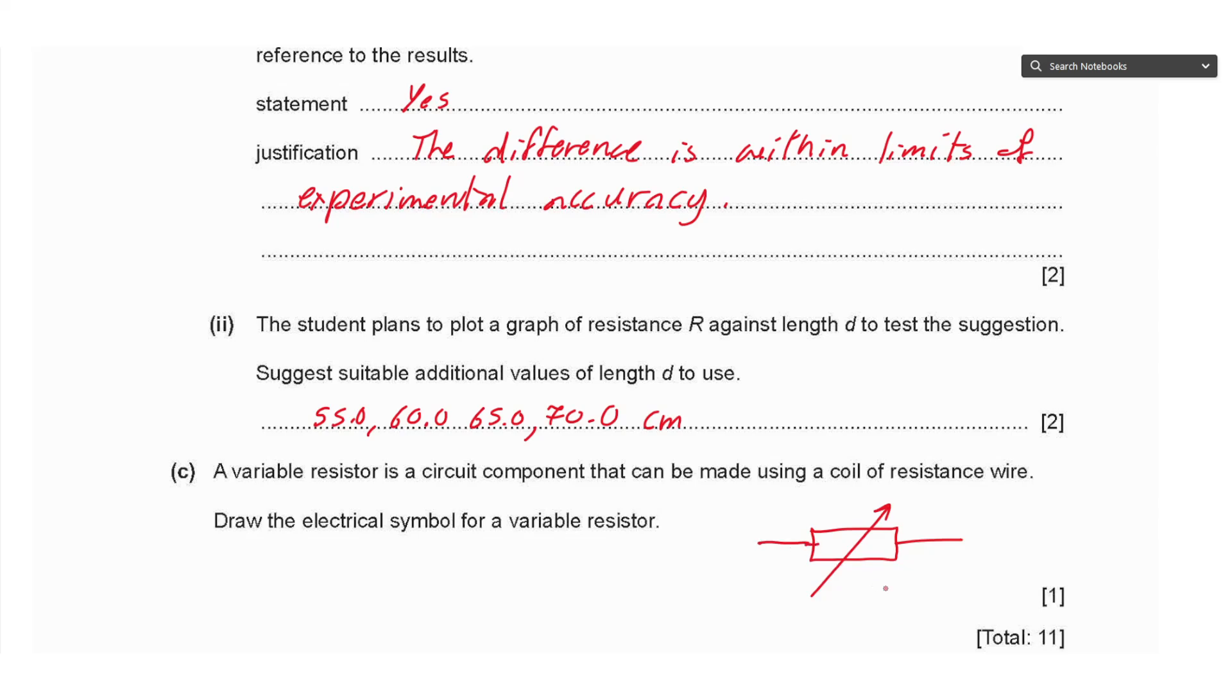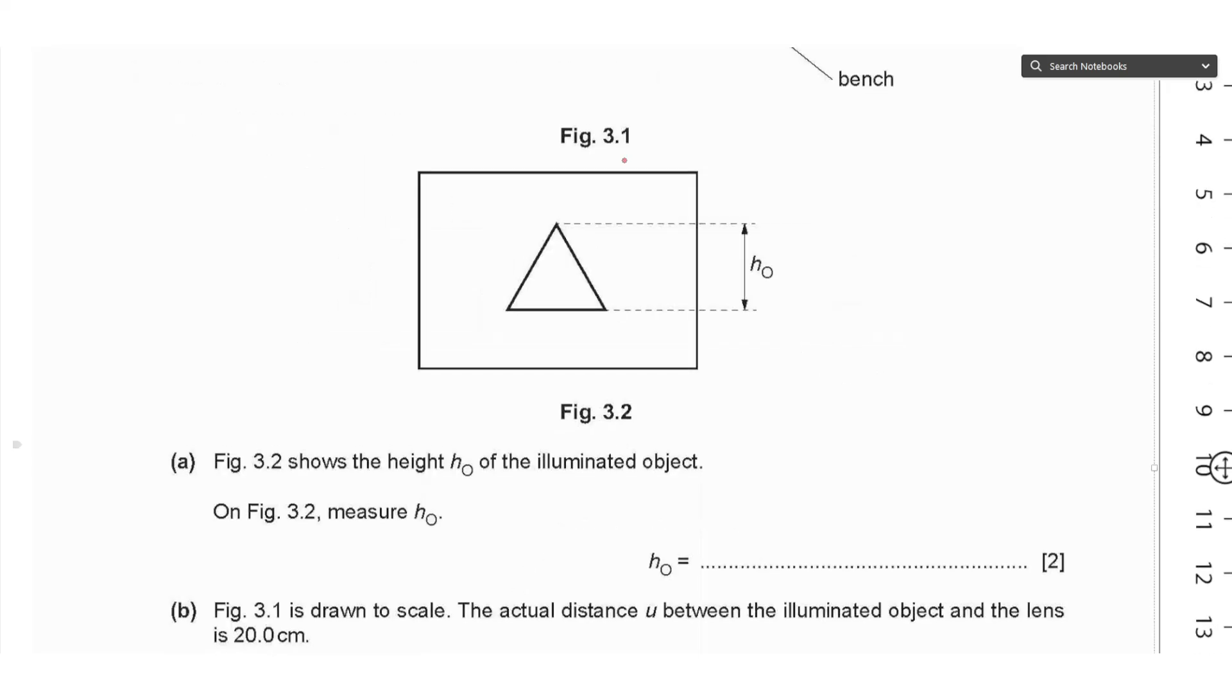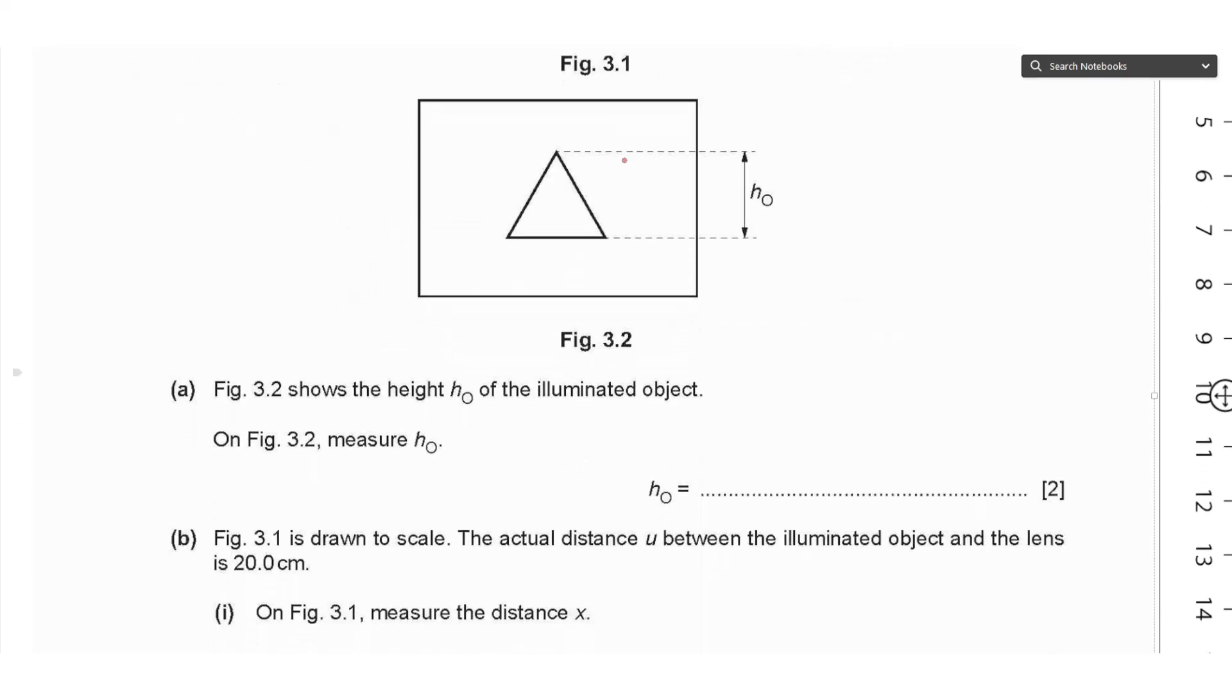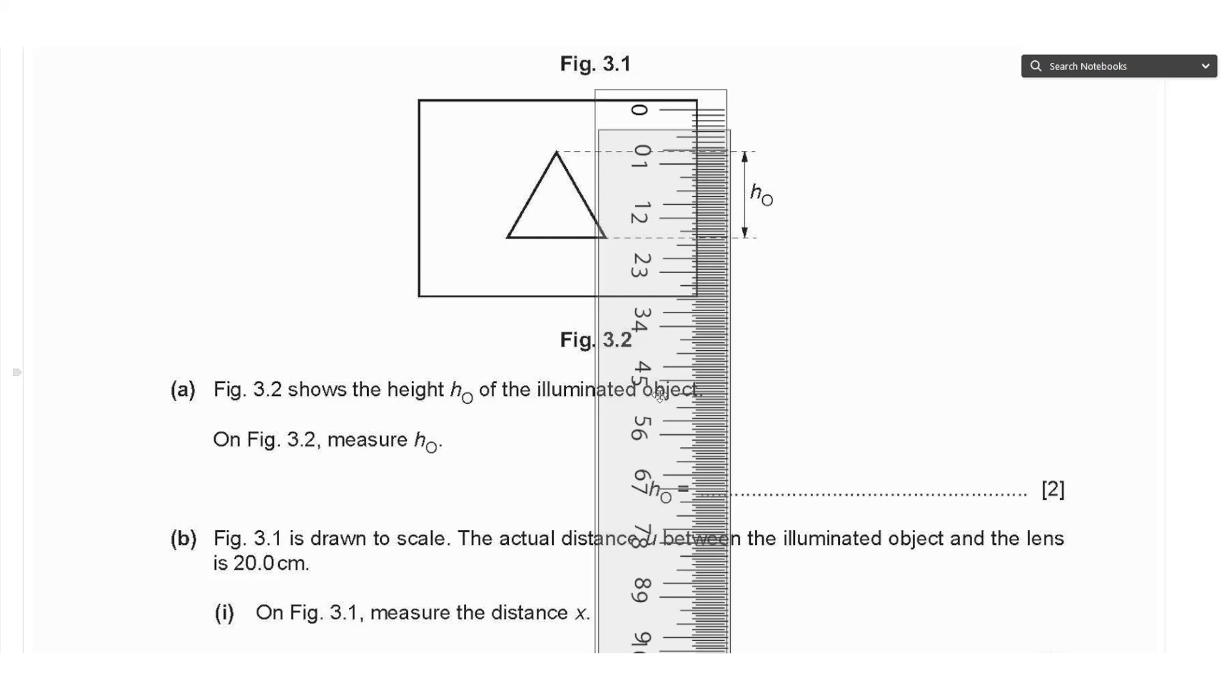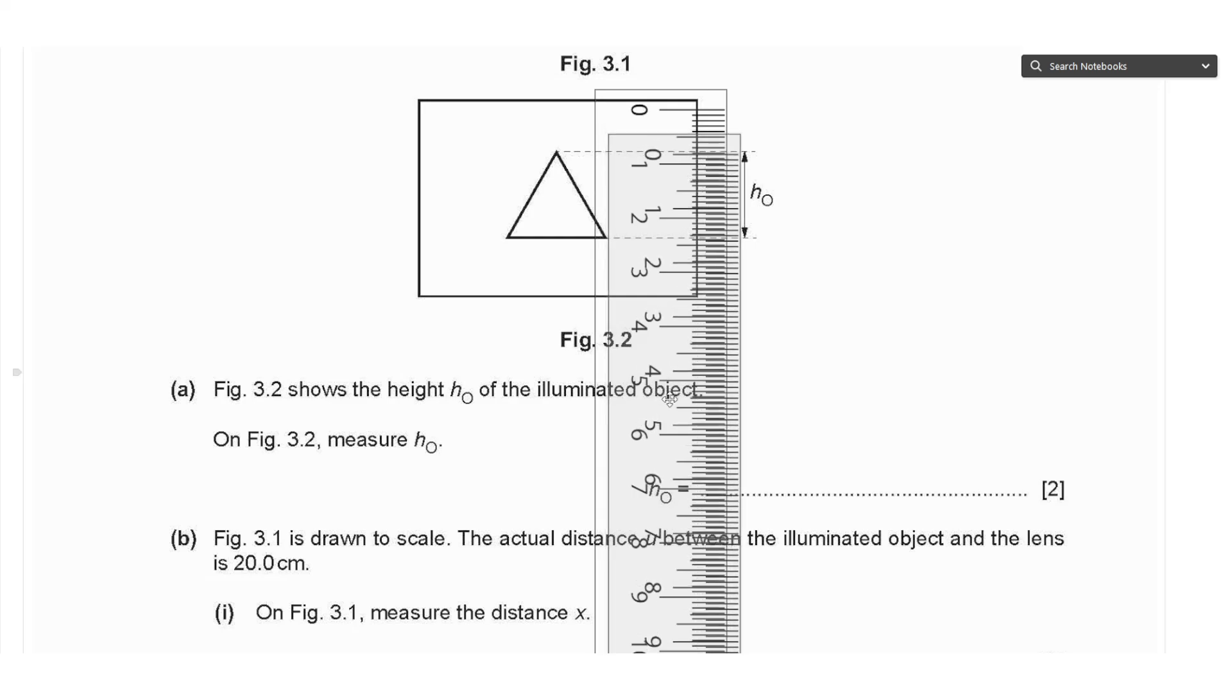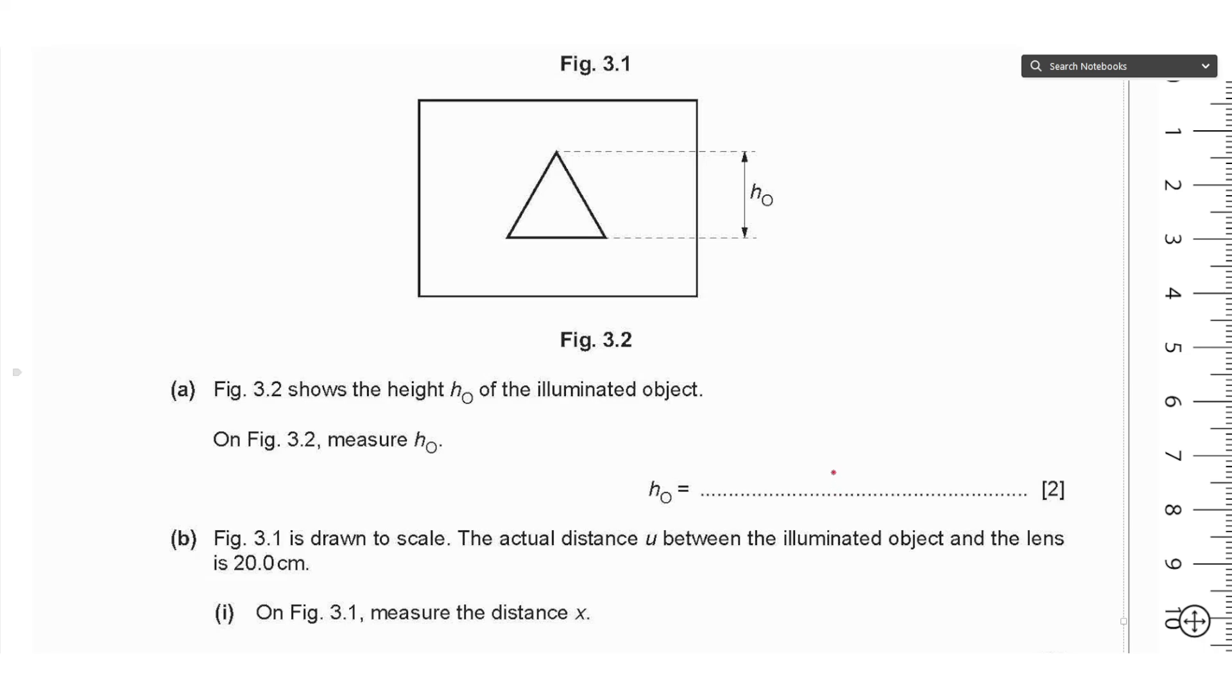Question 3 says the student investigates the image produced by a lens. Figure 3.1 shows the setup—we have the illuminated object, the lens, and the screen on a bench. Part A says Figure 3.2 shows the height h₀ of the illuminated object. On Figure 3.2, measure h₀. Using a ruler, measure the distance between the edges of the arrow—this is approximately 1.6 centimeters.